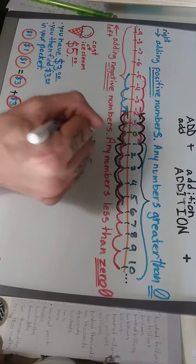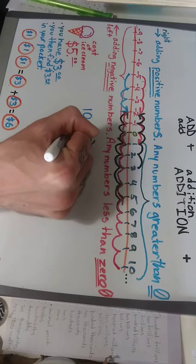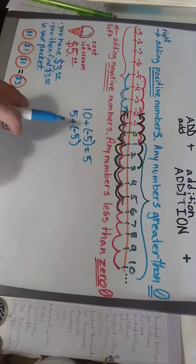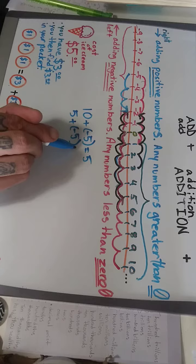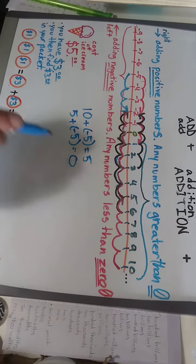With our five dollars, we added the cost of a second ice cream, which is five dollars represented here as negative five, and then we're left with zero dollars.